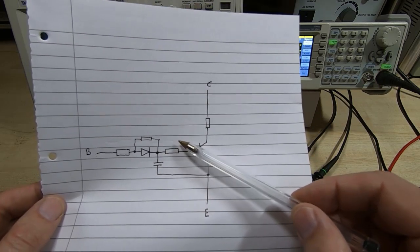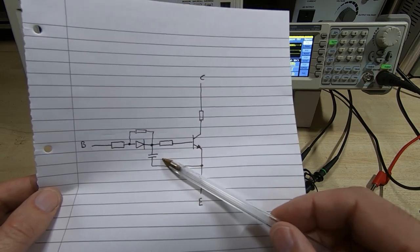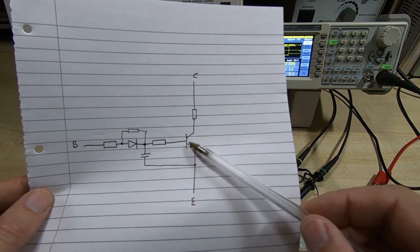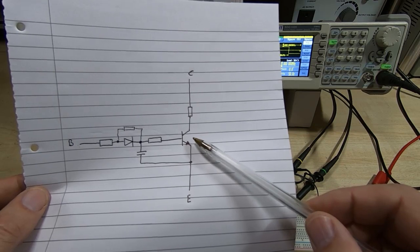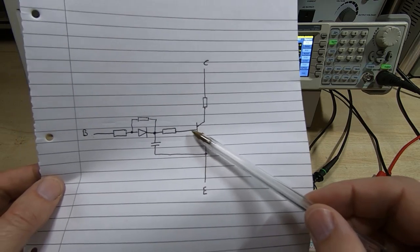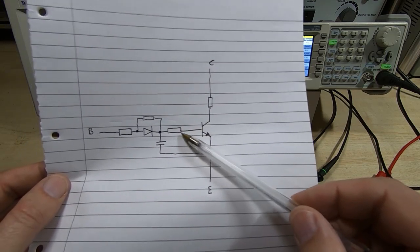And the problem there, of course, is when you want to turn it back off, you have to wait for the capacitor to get back down below the value where the transistor starts to turn off before the transistor will actually start to turn off.